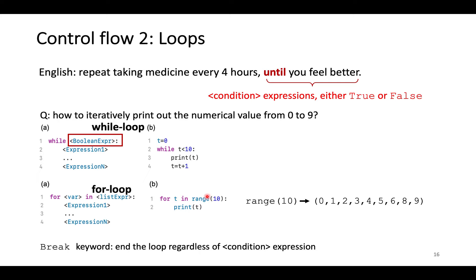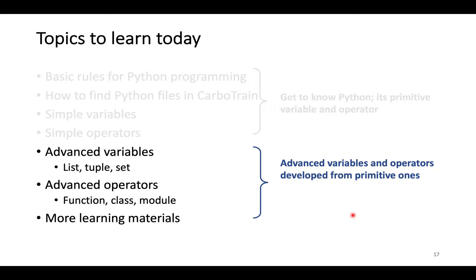For loop is to sequentially select each element from a collection. Here, the collection is from 0 to 9. And it kills the code block until all elements in the collection are retrieved. Notice, range 10 will return numbers from 0 to 9 without 10. A break keyword is to break the loop regardless of the condition expression.